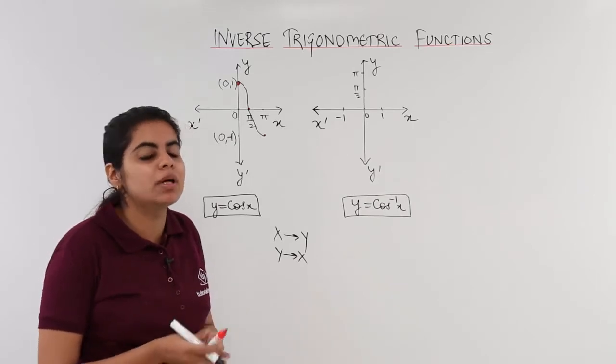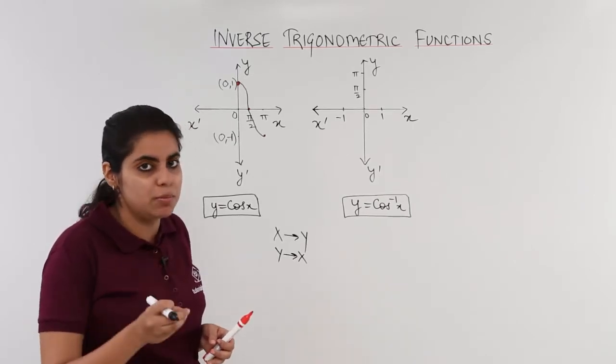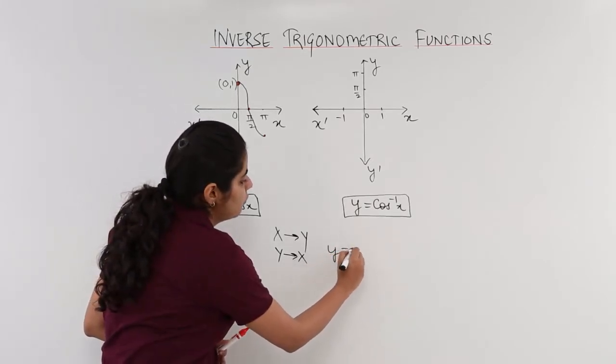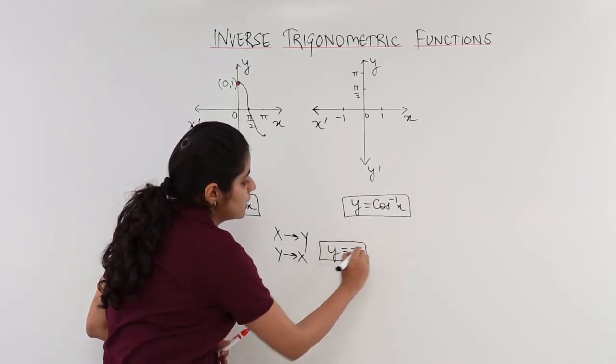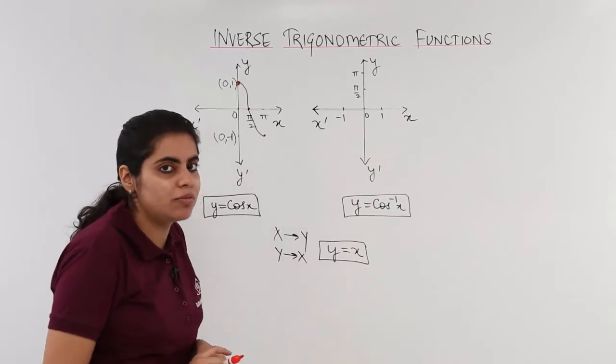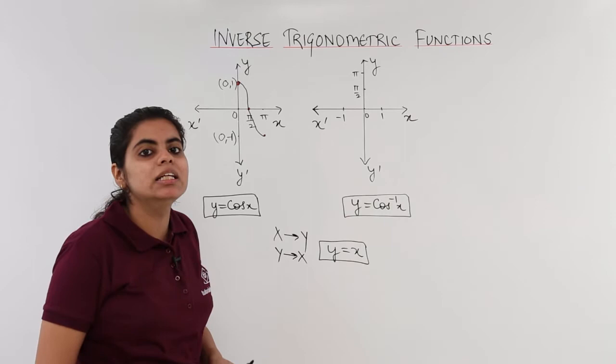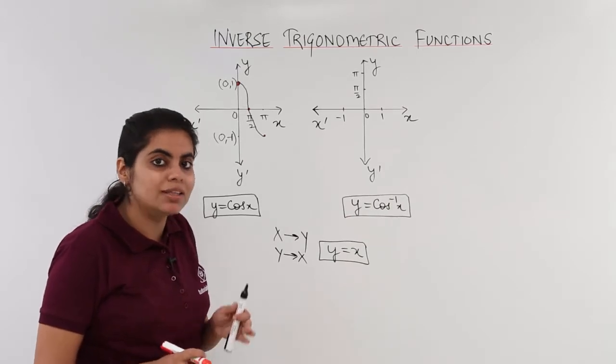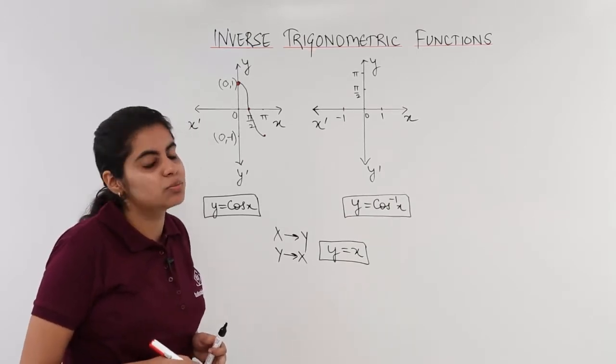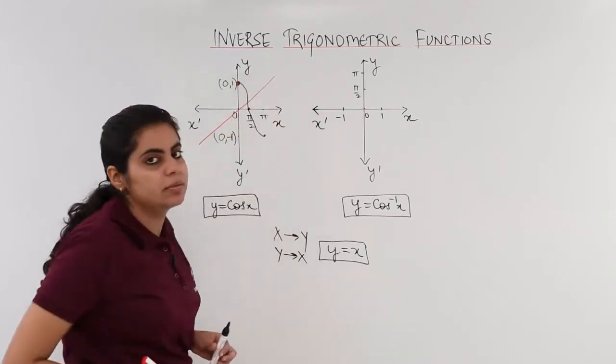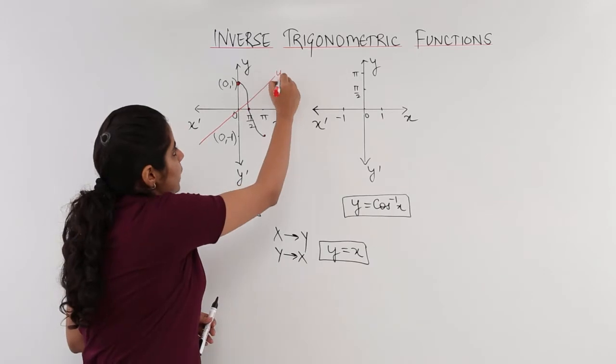What is the third step? Third step is to draw the mirror image or the reflection about the line y is equal to x. y is equal to x is simply a straight linear line having the angle of 45 degrees with the x axis. This is y is equal to x.